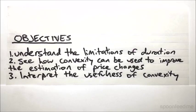Now we're going to look at how duration is actually rather limited as a way of approximating how price will change in response to changes in yield. Then we're going to see how we can use convexity to improve on that estimation and interpret how convexity is actually useful.